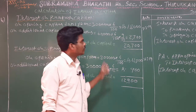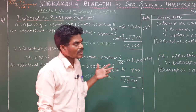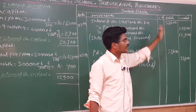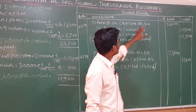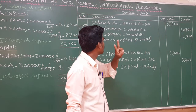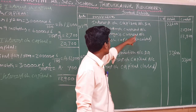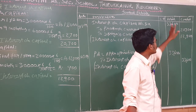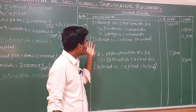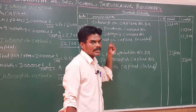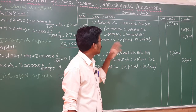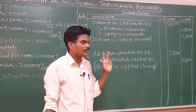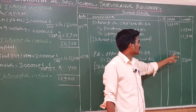Now we have the interest on capital structure. Next is the journal entry. The journal entry format includes date, particulars, LF, debit, and credit. The journal entry is: Interest on Capital Account Dr. to Prakash's Current Account 20,700 and to Supriya's Current Account 12,900. Total debit is 33,600. Being interest on capital provided. Then to close: Profit or Loss Appropriation Account Dr. to Interest on Capital Account — total 33,600.